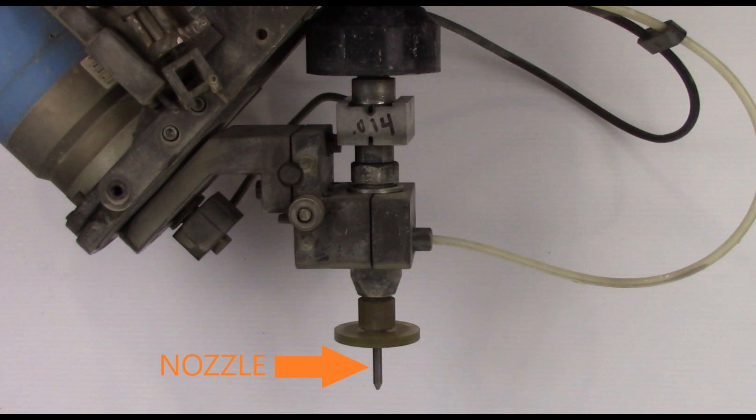If the ultra-high-pressure water does not clear the clogged nozzle, the water pressure can eject the nozzle from the abrasive jet, causing it to become a projectile. If this process does not clear the nozzle, it must be replaced.